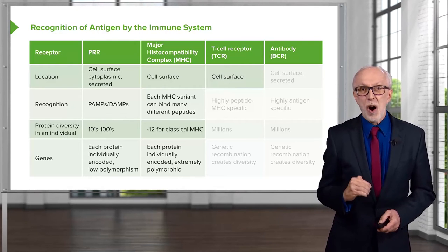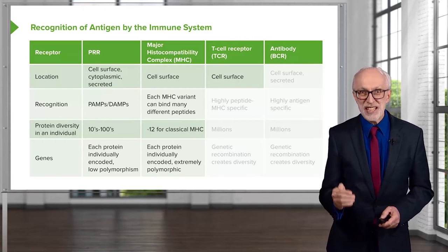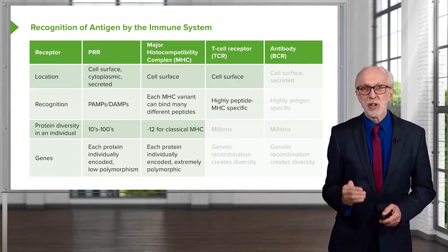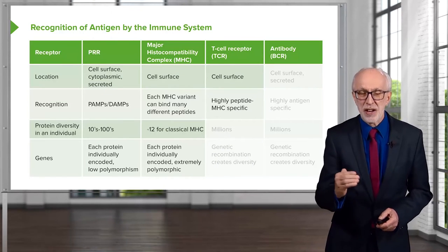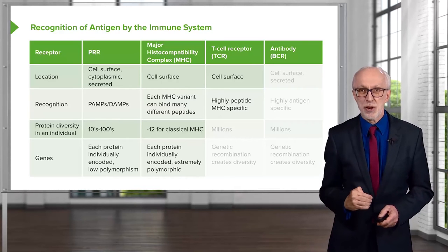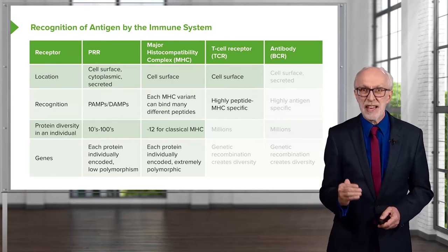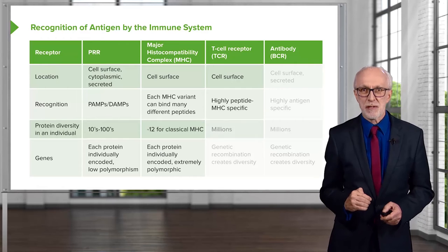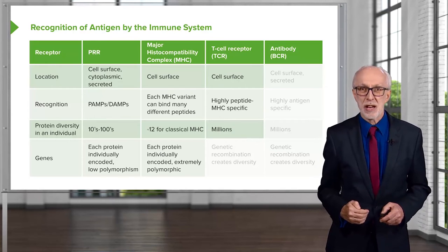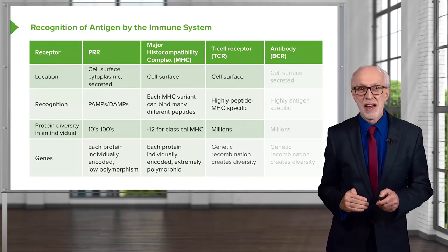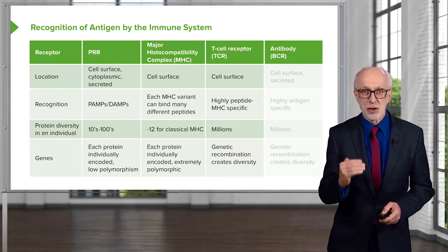Then at the level of the cell surface of lymphocytes, on T cells, we have the T cell receptor. This molecule is highly specific for a given combination of a peptide that is produced by processing a protein antigen, put together with MHC molecules. So T cell receptors are highly peptide-MHC specific. And we can create millions and millions of different T cell receptors — each of us can do that. This is due to a unique genetic recombination mechanism to create diversity.